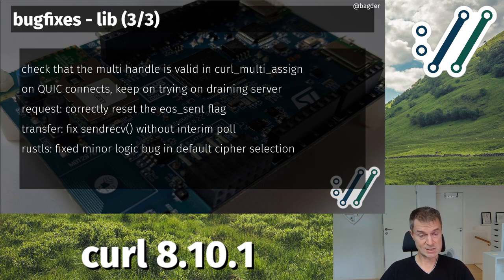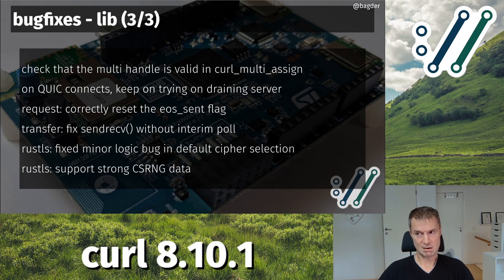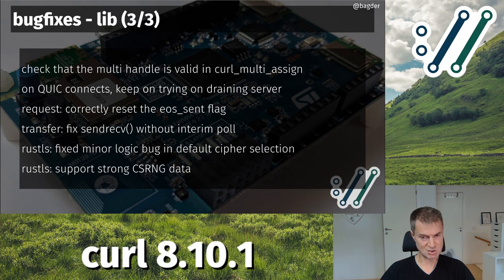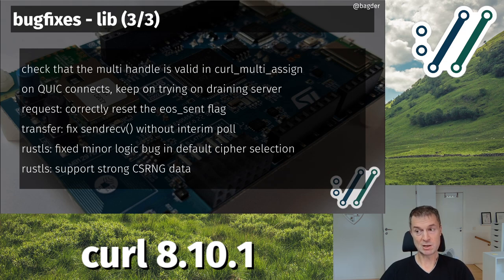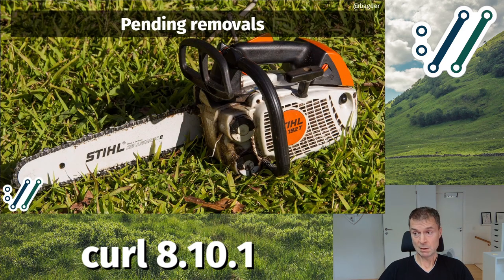We fixed the Rustls backend so you can now set the cipher selection correctly. We also addressed what I think is the last TLS-related random number generator issue: now every time you build curl with TLS support, we use the TLS library's RNG functions so they will be cryptographically strong, giving better randomness in curl. Things that need random — mostly authentication methods — now perform better. Previously when building with Rustls, we wouldn't have a strong random source. Rustls support is still marked experimental.